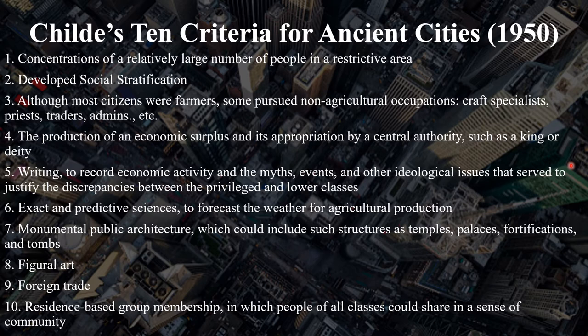Eight, to be considered a city, a center must have figural art. Nine, the city must be involved in foreign trade. And ten, the people living in a center must have residence-based group membership, in which people of all classes could share in a sense of community — the community of the city. What you're going to see is that Jericho and Chatalhuyuk have many of these criteria, but neither of them have all ten. So for the purpose of this course, Jericho and Chatalhuyuk will not be considered cities. However, some settlements we'll discuss later, like Uruk, had all ten of these criteria, and therefore they will be considered cities.